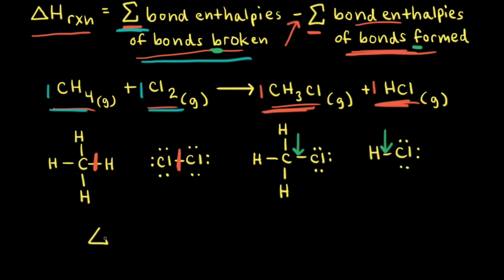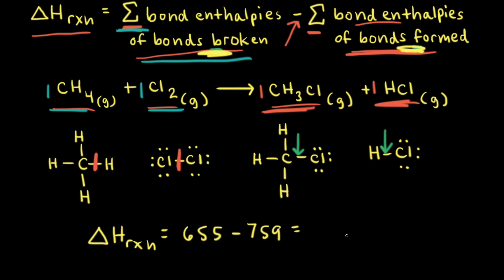Now we're ready to find the change in enthalpy for the reaction. The sum of bond enthalpies of bonds broken is 655 kilojoules, and we subtract the sum of bond enthalpies of bonds formed, which is 759 kilojoules. So 655 minus 759 gives negative 104 kilojoules.